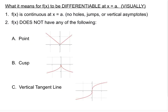So what it means for f of x to be differentiable at x equals a — we're going to talk visually first. First off, f is continuous at x equals a, so you can't have any holes, jumps, or vertical asymptotes. A discontinuity immediately means that a function is not differentiable at that point.